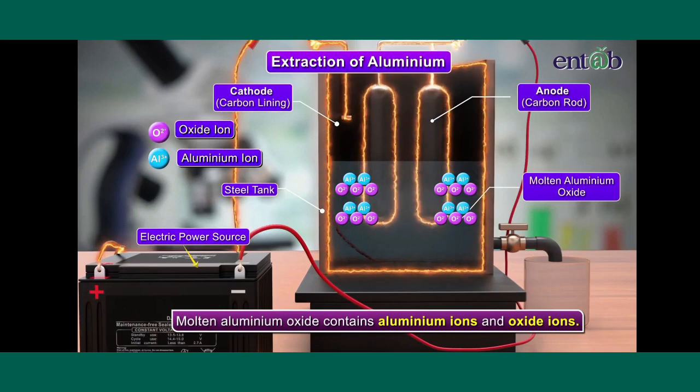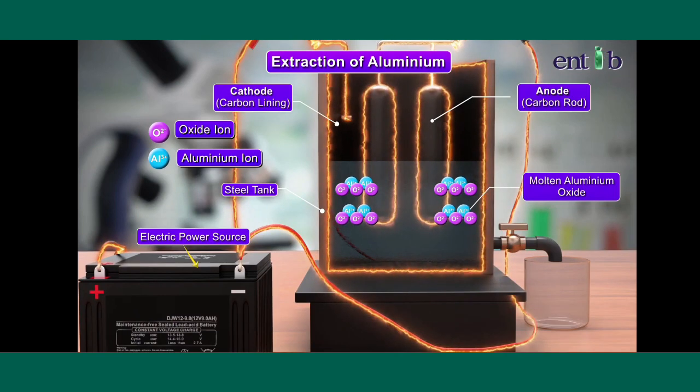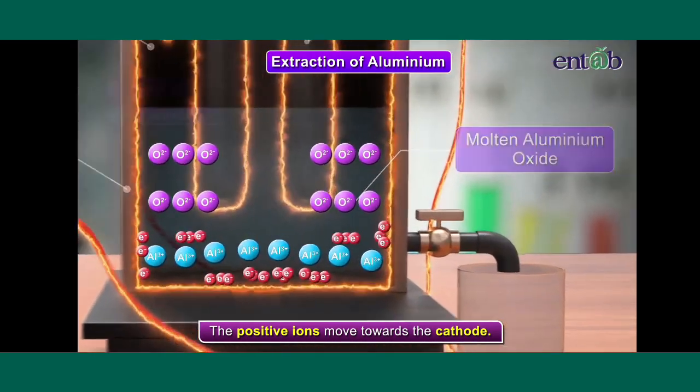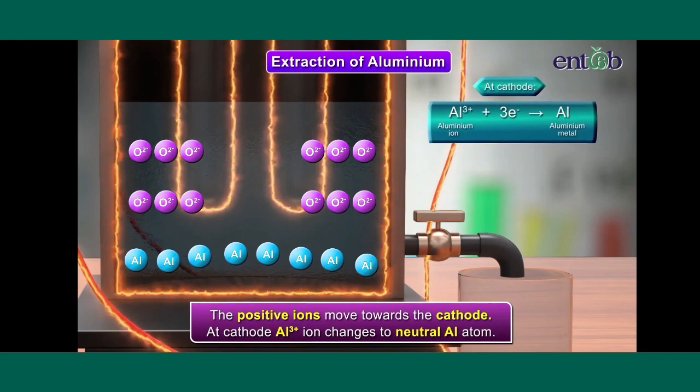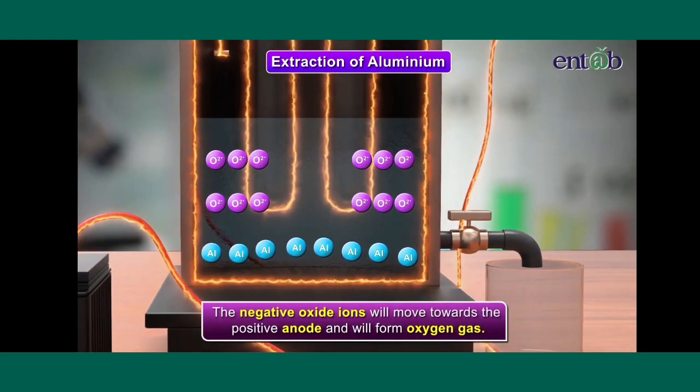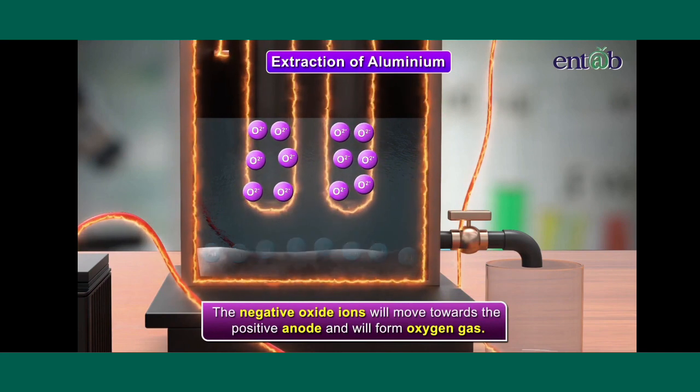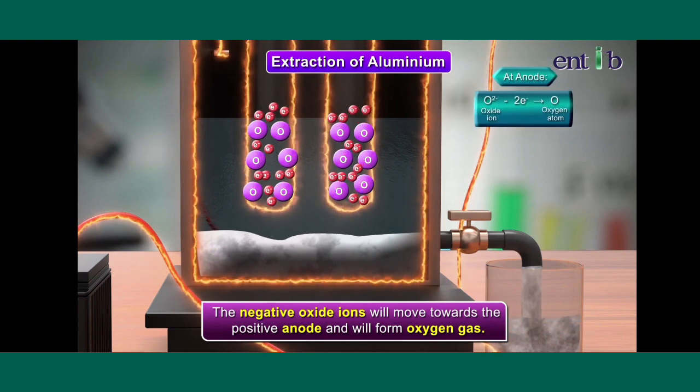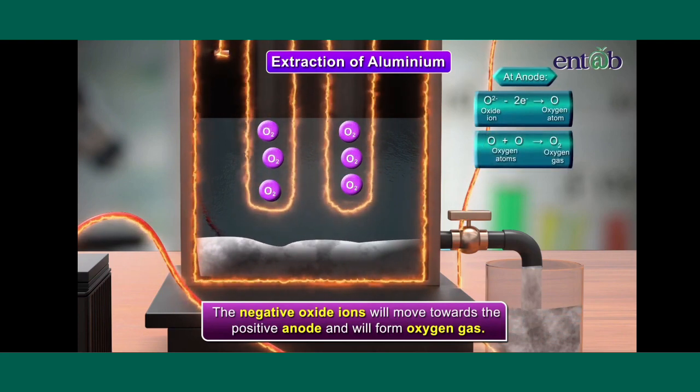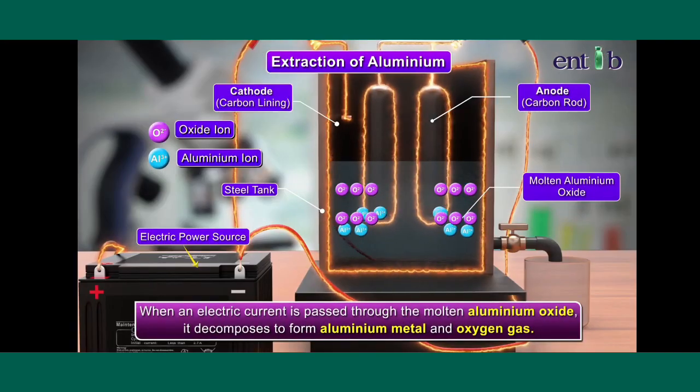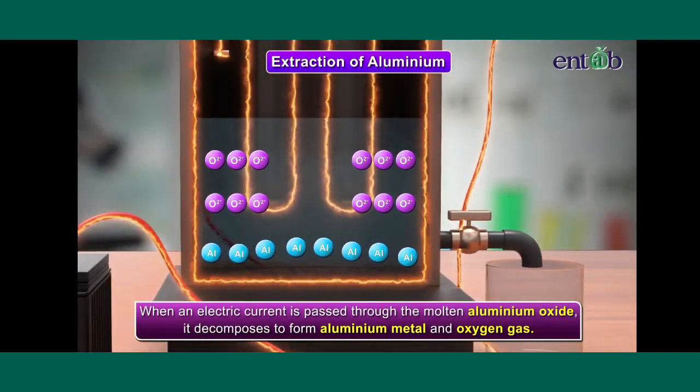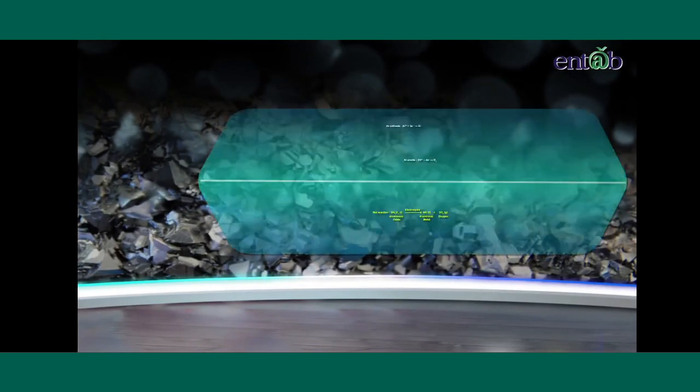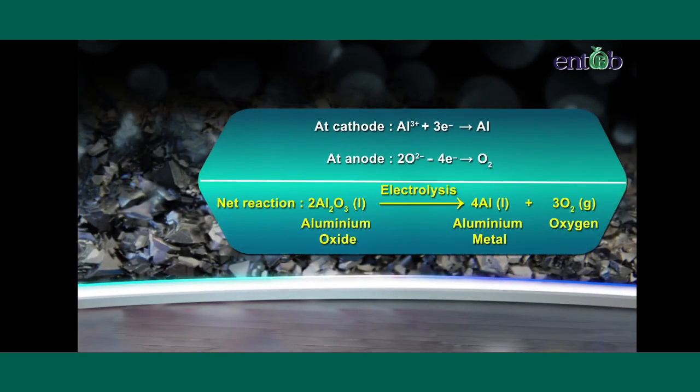When electricity is passed through the molten aluminium oxide, then positive ions move towards the cathode, where they take electrons and become neutral aluminium metal atoms. The negative oxide ions will move towards the positive anode and will form oxygen atom or oxygen gas, giving away electrons to the anode. When an electric current is passed through the molten aluminium oxide, it decomposes to form aluminium metal and oxygen gas. The net chemical reaction can be shown as displayed.